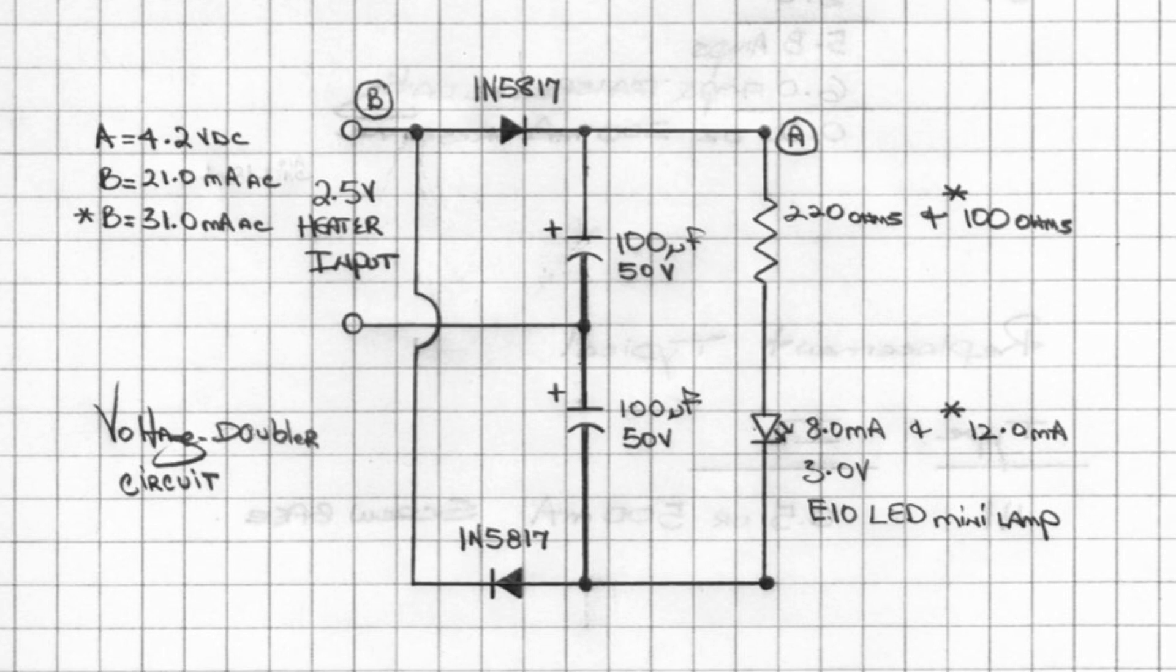At 220 ohms, the LED operates at around 8 milliamps, and at 100 ohms at 12 milliamps. The voltage at point A was around 4.2 volts DC in my case, and the AC current was around 21 milliamps.